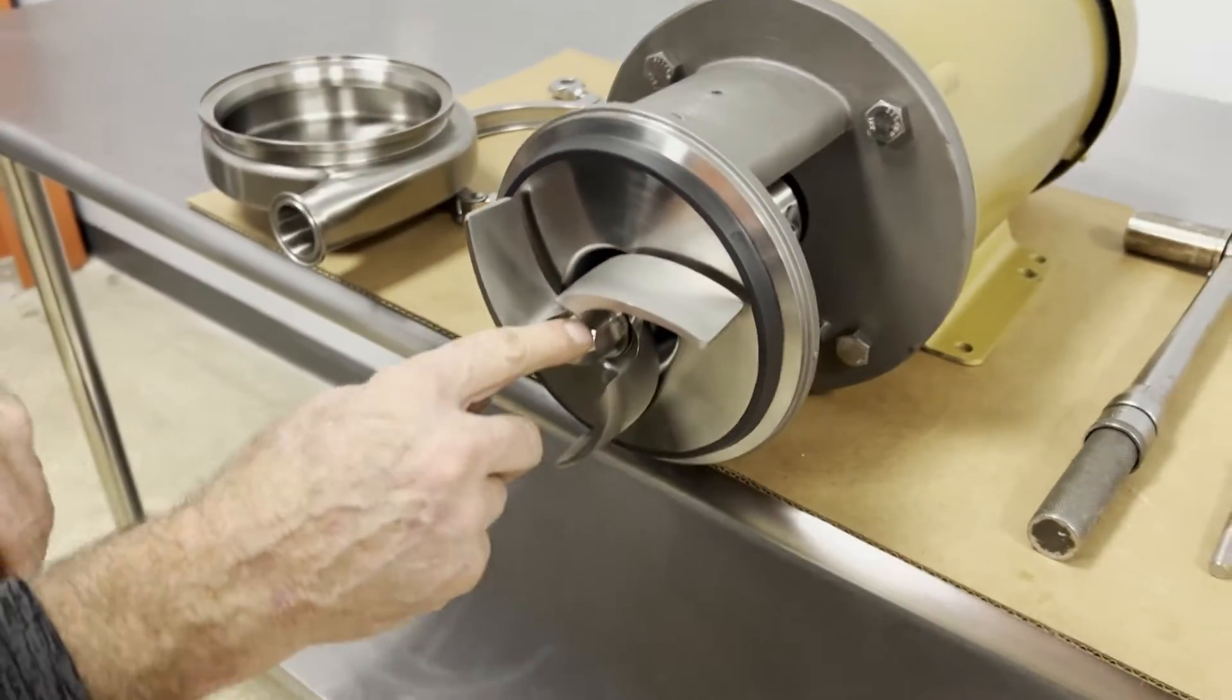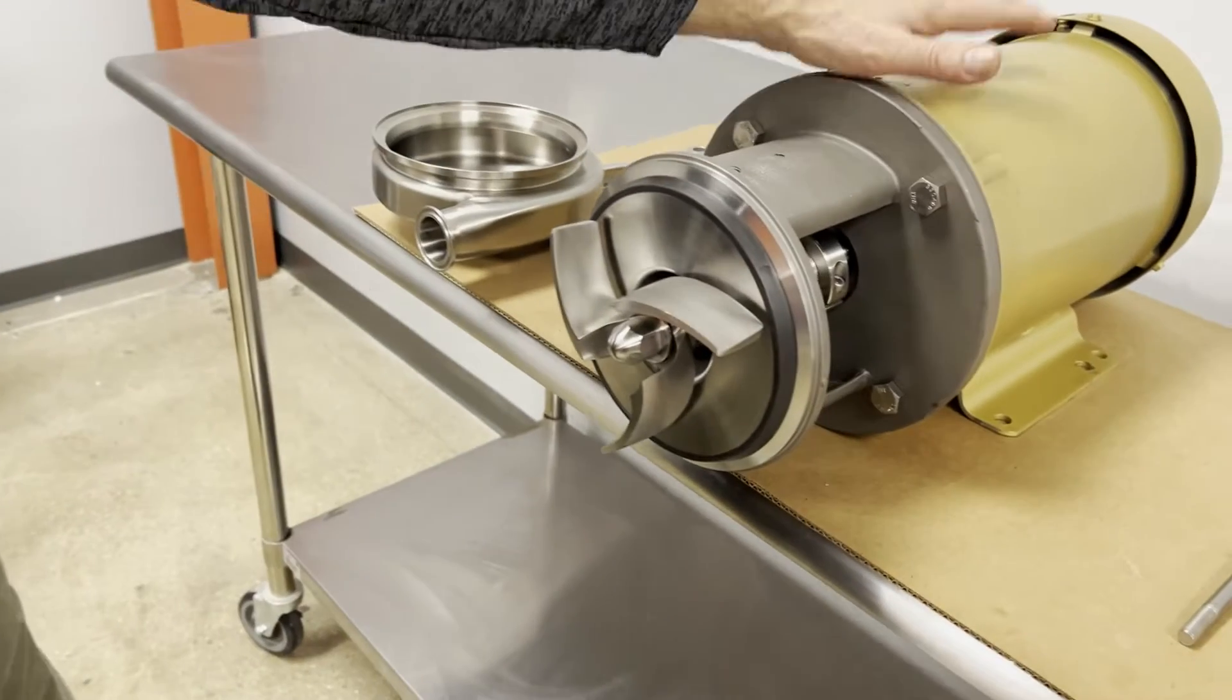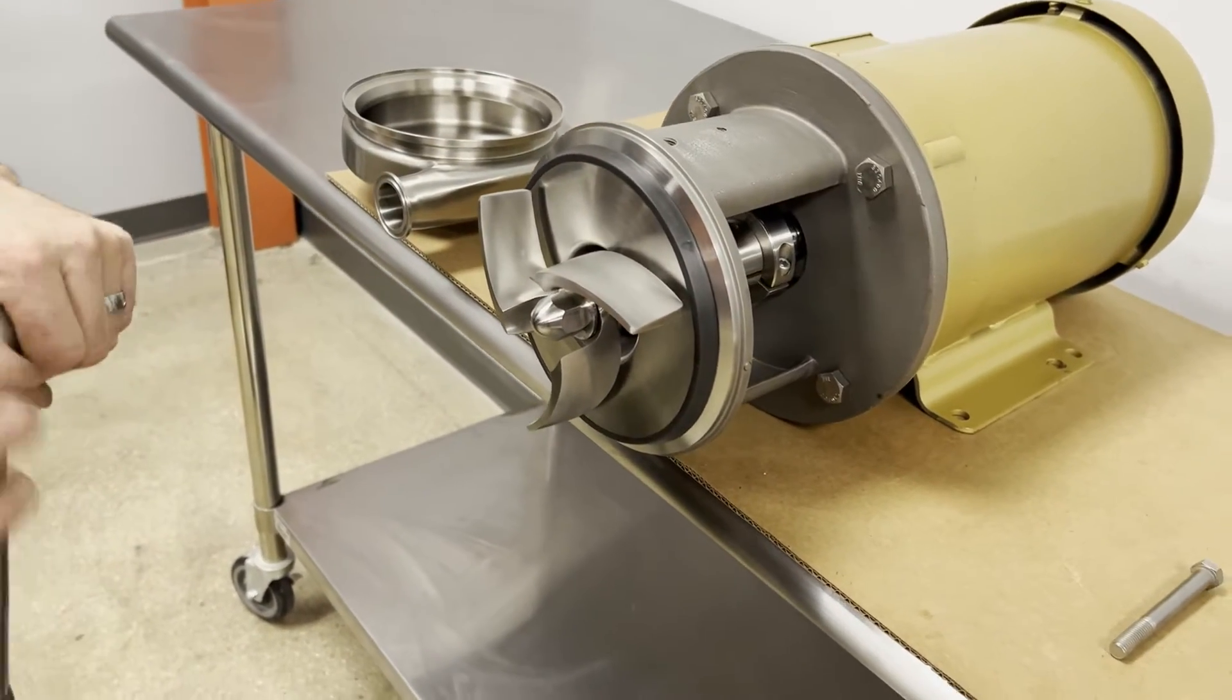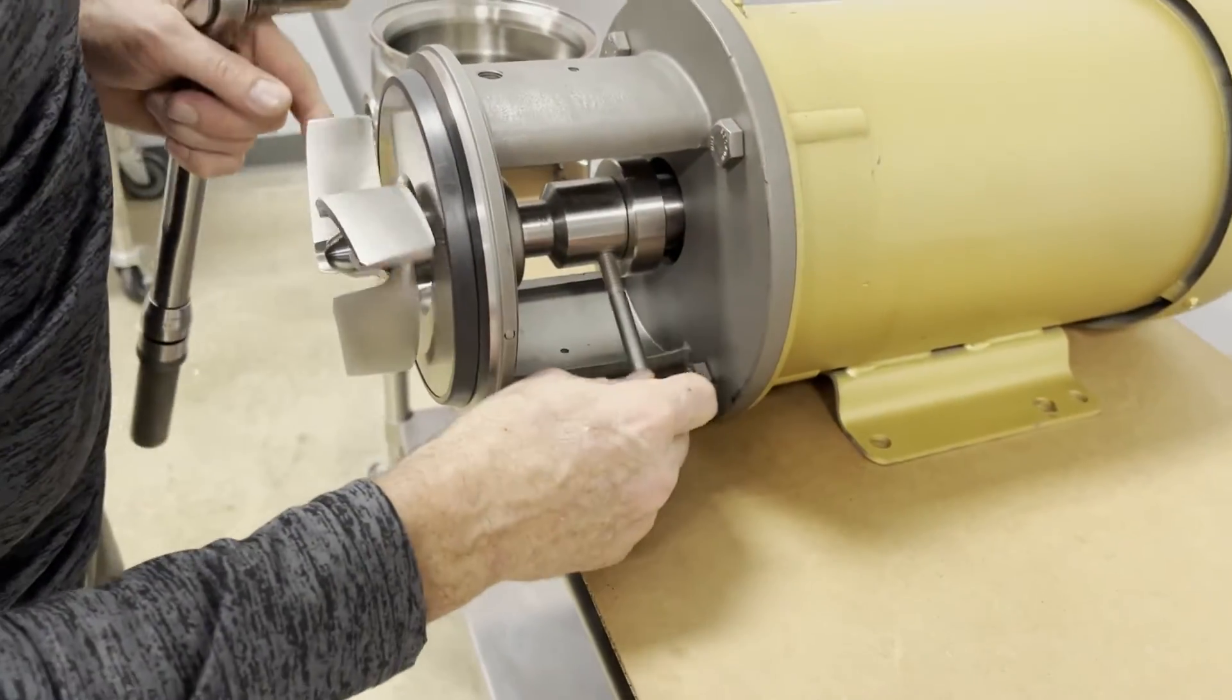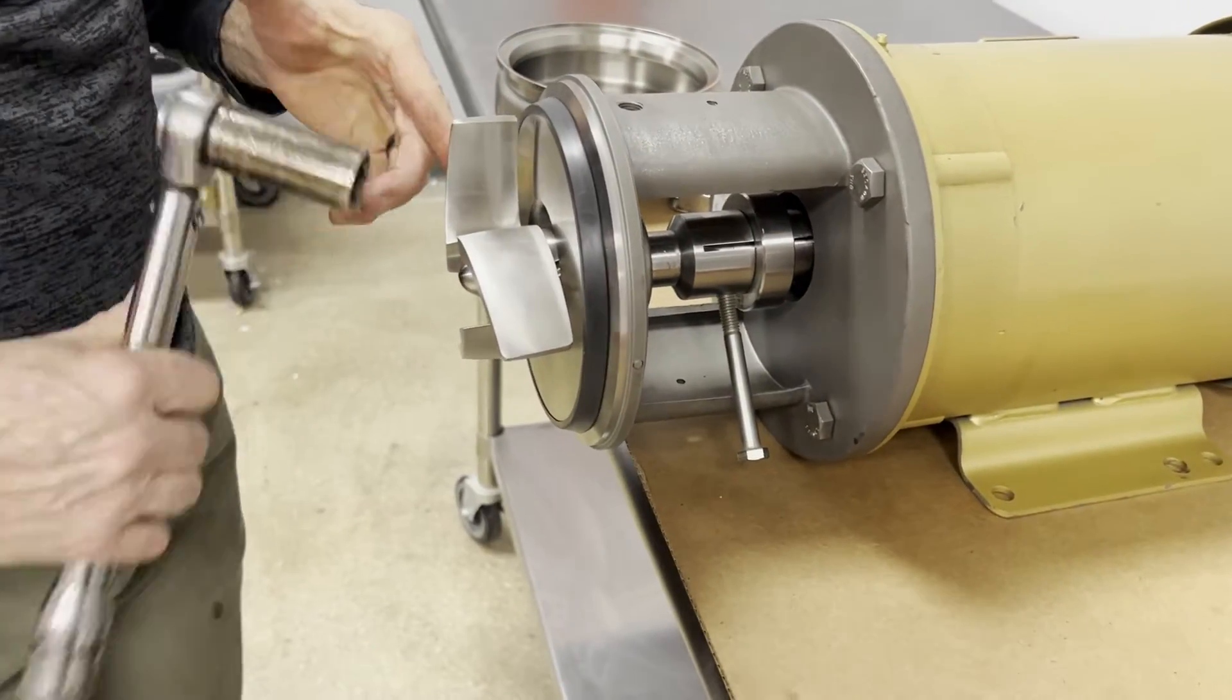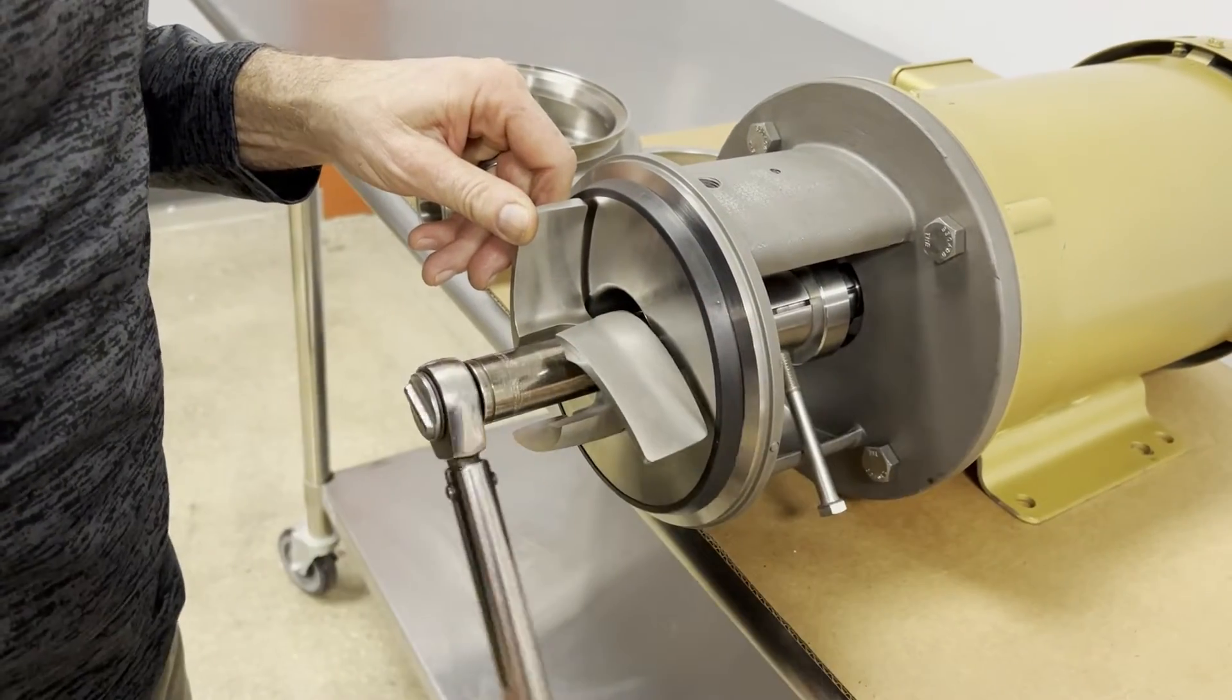Now this nut has a torque value, but that's depending on the pump model and also the motor size, which is in our manual. Again, we come over here, we put our bolt into the stub shaft, and we will torque this nut to the proper value.